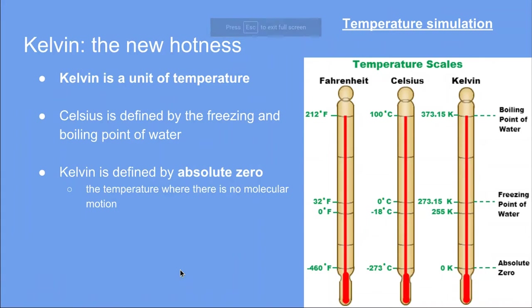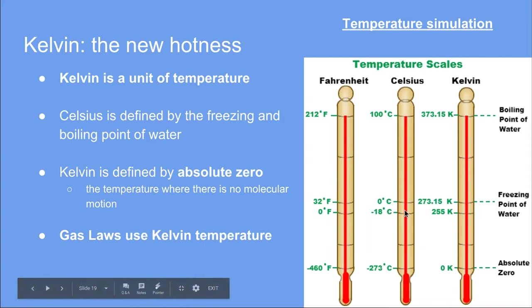Coming back to this, we need to understand Kelvin because when we're using our gas laws, we'll be dividing by our measurement of temperature. This gives us a problem mathematically, because zero degrees Celsius is a valid, real temperature. If we were to use it in our formulas, it would break them, because we can't physically divide by zero — it's a mathematical impossibility. We'll see that in a little more detail in just a second when we pull up an example.